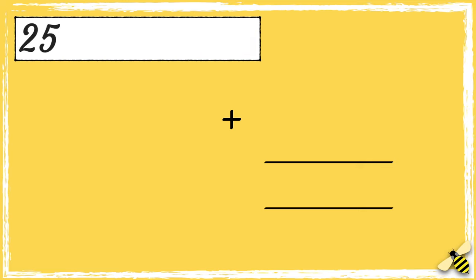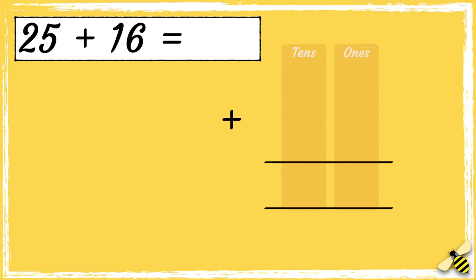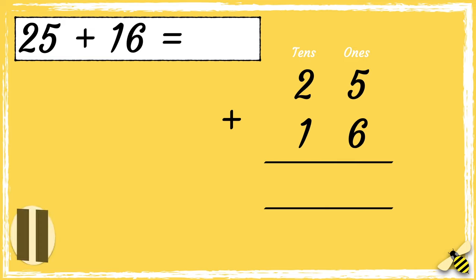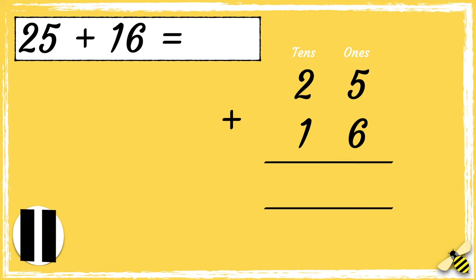So the answer is 33. Let's have a look at another example. Here is a number sentence: 25 add 16. Remember to line your numbers up correctly so we have the tens in one column and the ones in another column. Pause the video to give you time to work out the answer, press play when you're done.